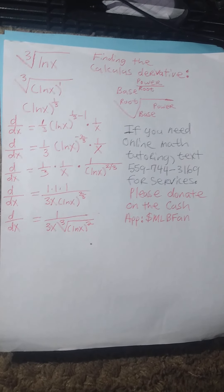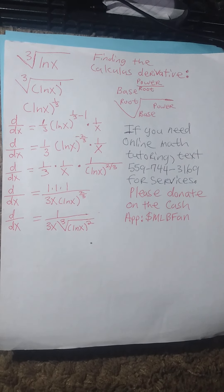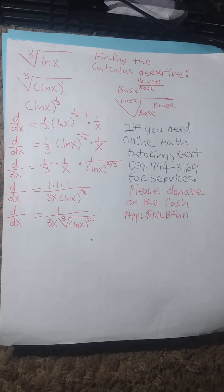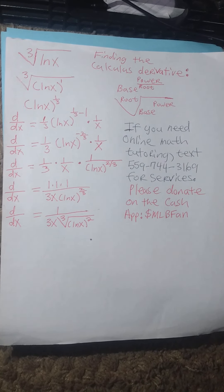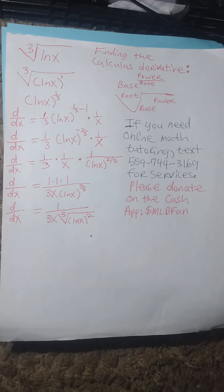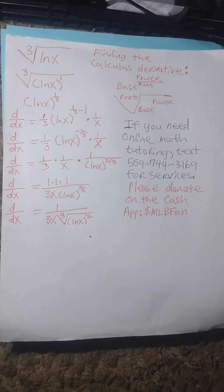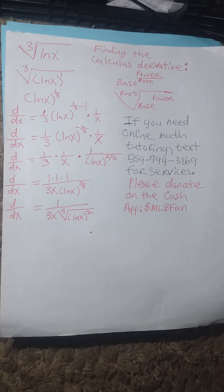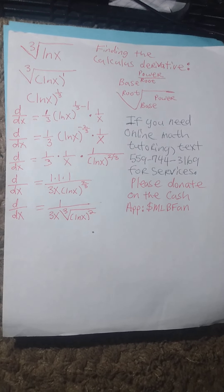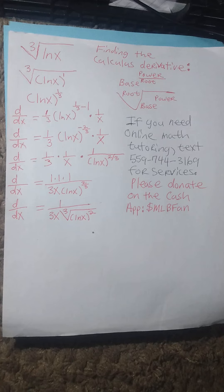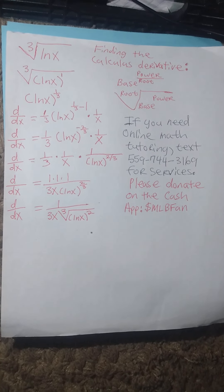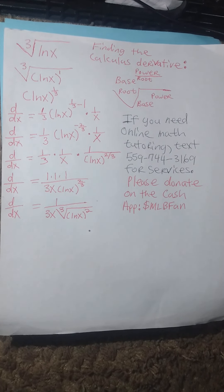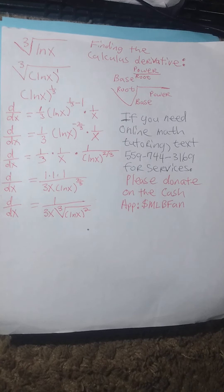So the complete derivative is 1/3 times natural log of x to the power of 1/3 minus 1, times 1 divided by x. This derivative simplifies to 1/3 times natural log of x to the negative 2/3 power, times 1 divided by x.